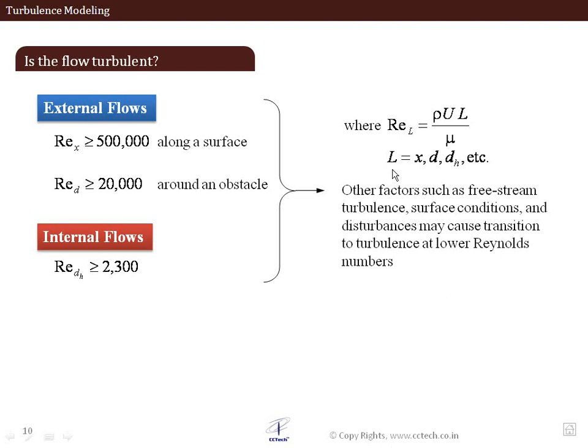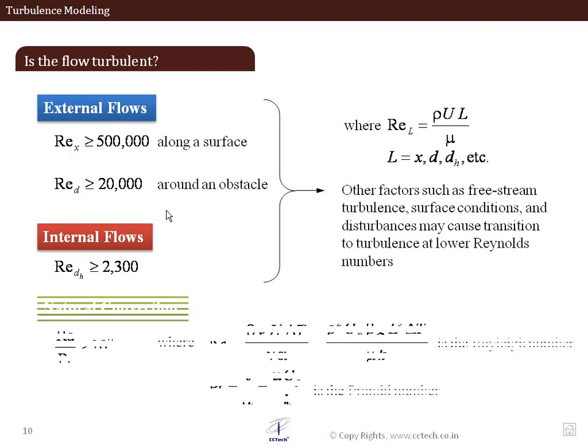It is defined in terms of a characteristic length scale which can differ for different kinds of problems. For external flows along a surface, there's a boundary layer generation. Beyond half a million Reynolds number, the flow starts becoming turbulent. If it's a flow around an obstacle, it becomes turbulent around the 20,000 Reynolds number figure. These are some of the values which we know from literature.